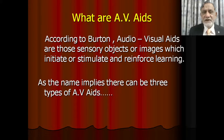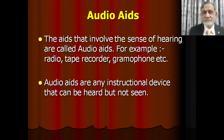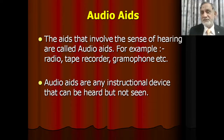As the name implies, there can be three types of AV aids. The first one is Audio Aids. Audio aids involve the sense of hearing, and the examples are radio, tape recorder, gramophone, etc.